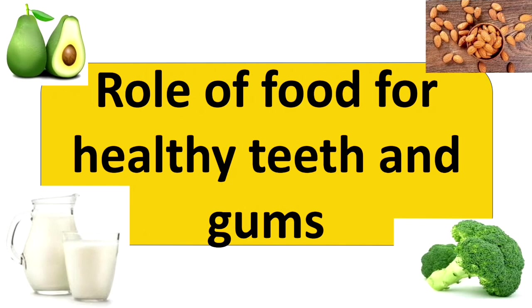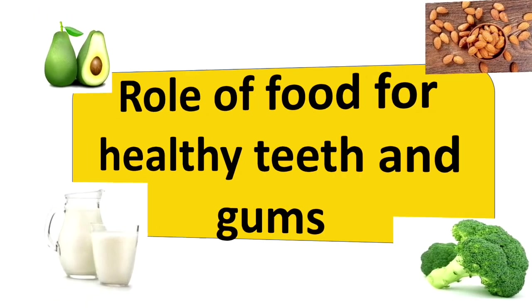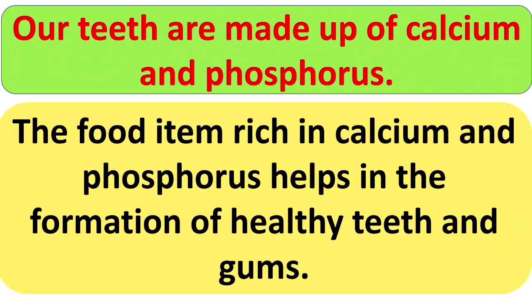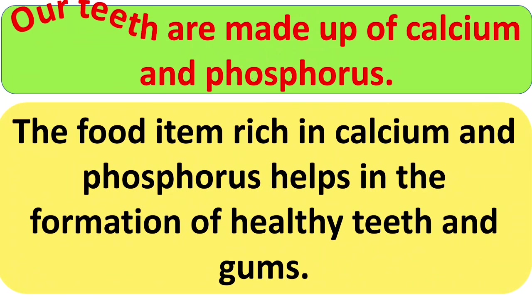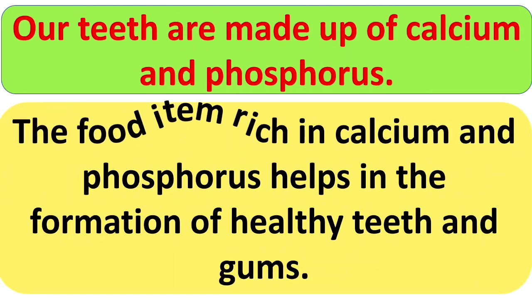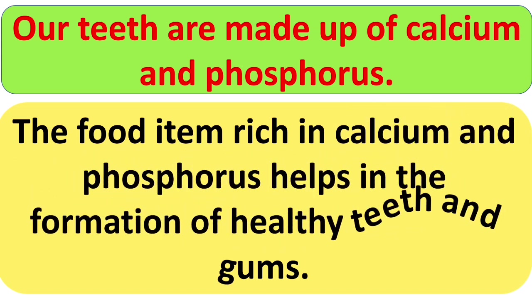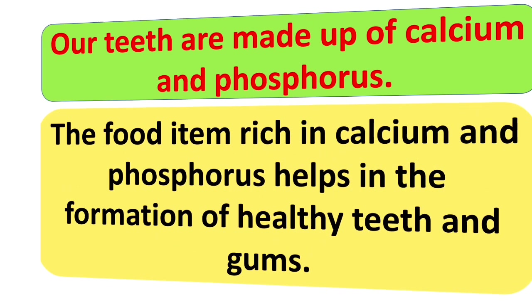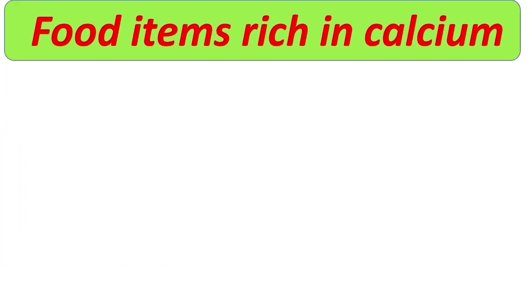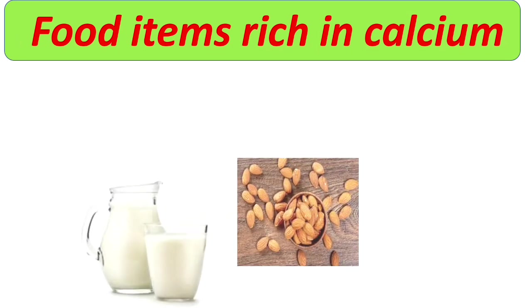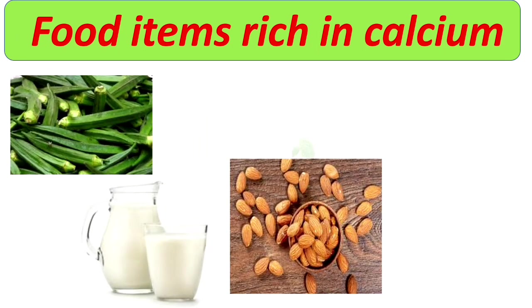Now we will see the role of food for healthy teeth and gums. Our teeth are made up of calcium and phosphorus, so food items rich in calcium and phosphorus help in the formation of healthy teeth and gums. Food items rich in calcium are: milk, almonds, ladyfingers, and broccoli.